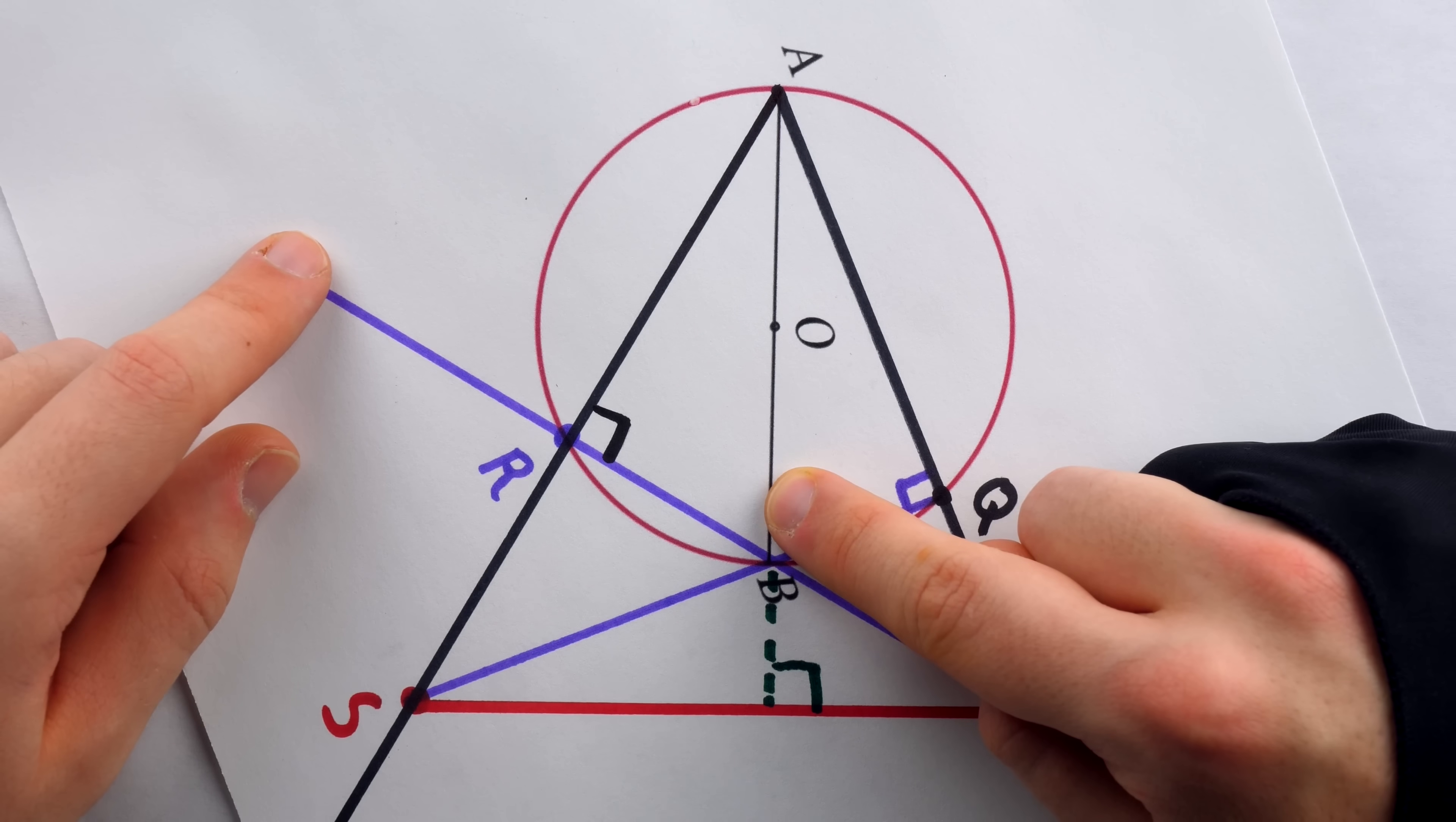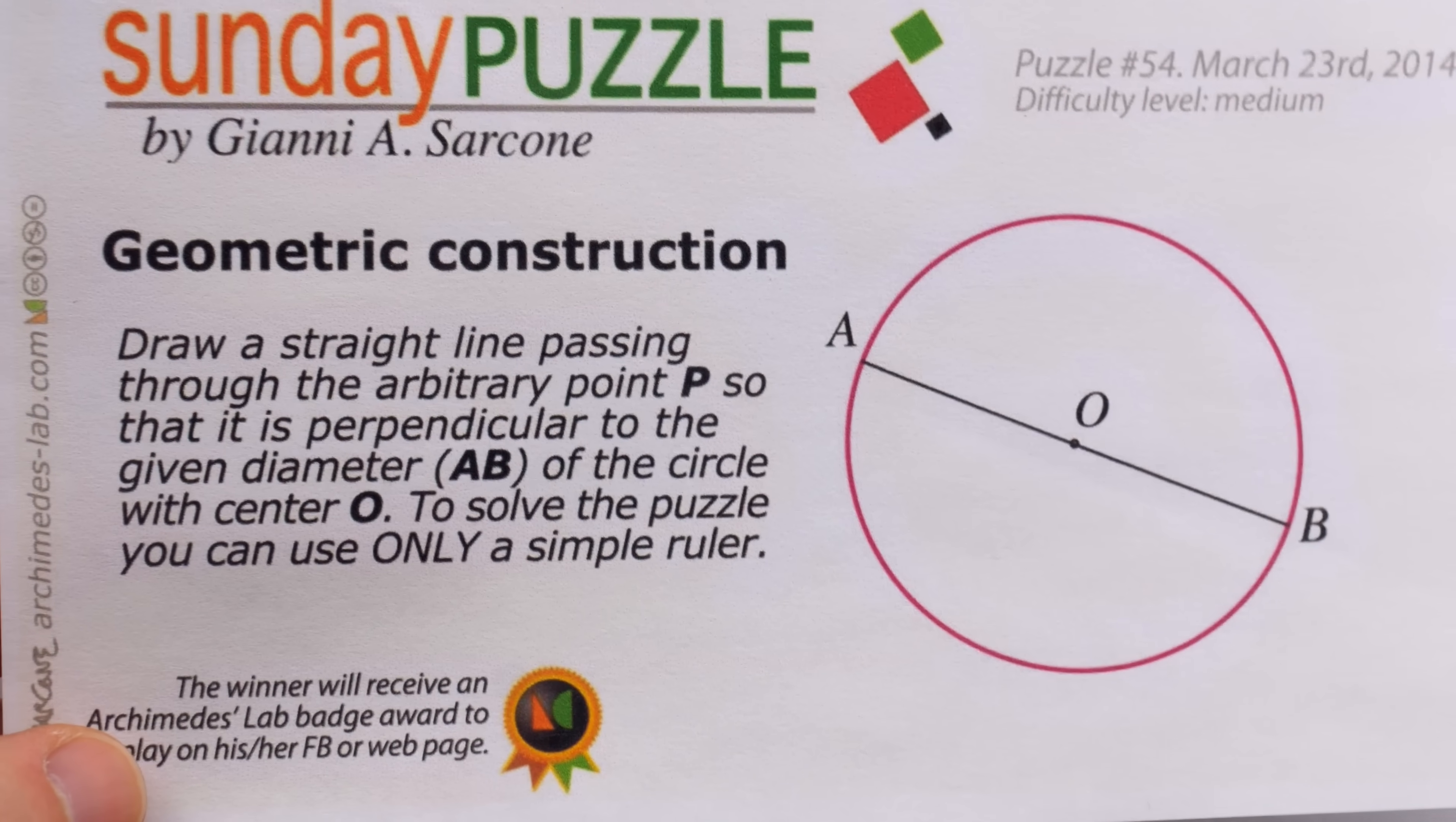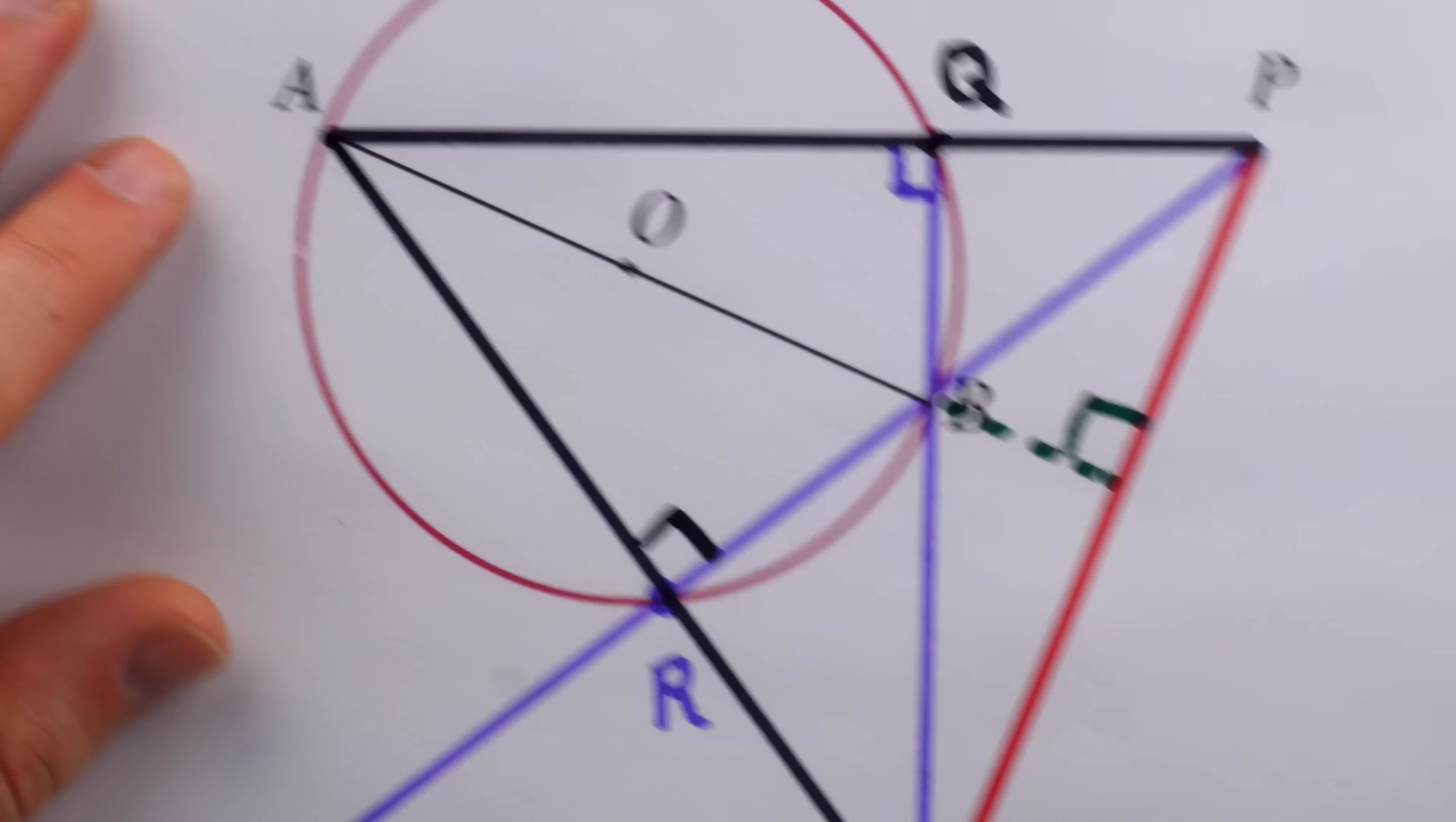Thus, the diameter lies on this line, which is perpendicular to PS. And so we've completed the objective of drawing a straight line passing through the point P so that it's perpendicular to the given diameter AB.